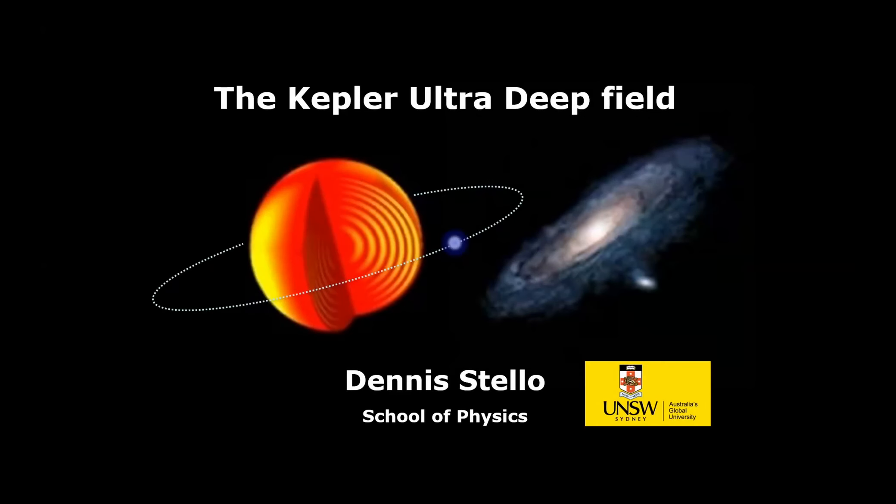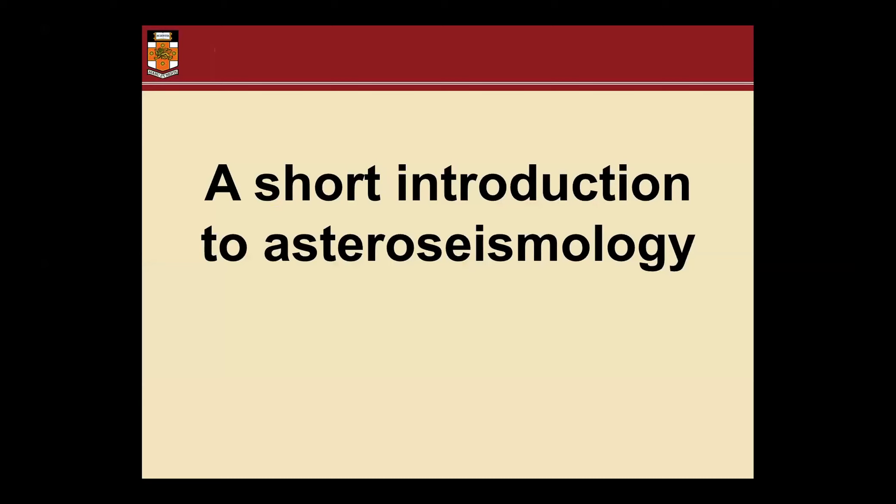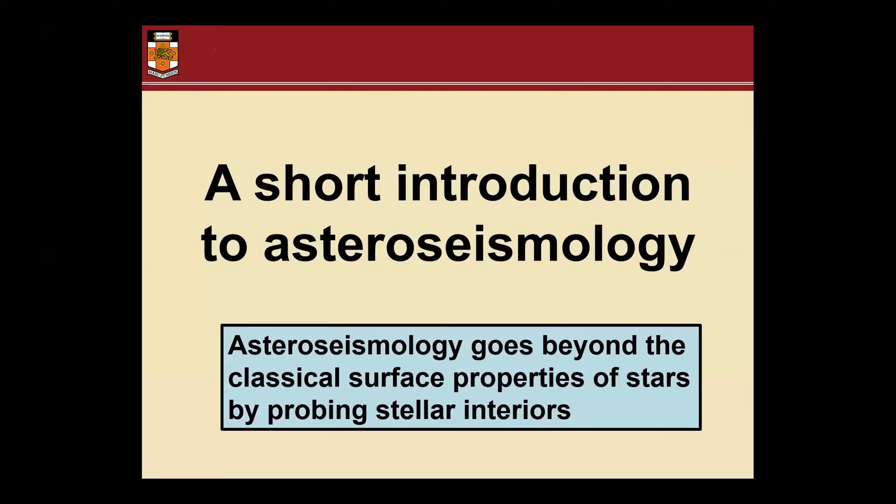Today I'll talk about the Kepler ultra deep field and whenever I talk about Kepler I usually talk about asteroseismology, which is that ringing thing you can see there in orange and yellow. As I know there's a few new faces here, I thought I'd give you a quick introduction to what asteroseismology is. The main takeaway is that asteroseismology goes beyond the classical surface properties of stars as measurements - we actually probe the interior.